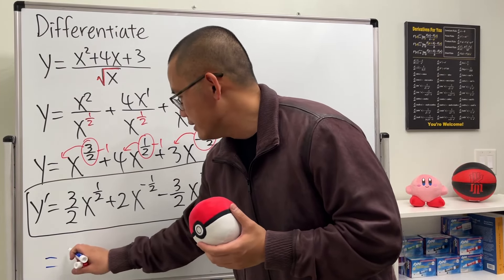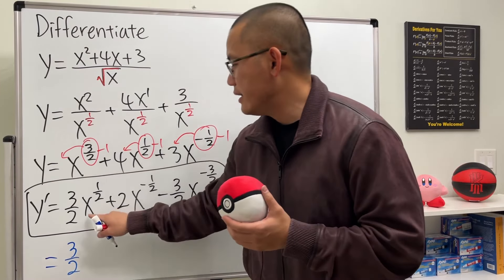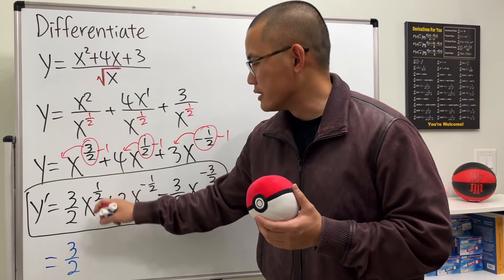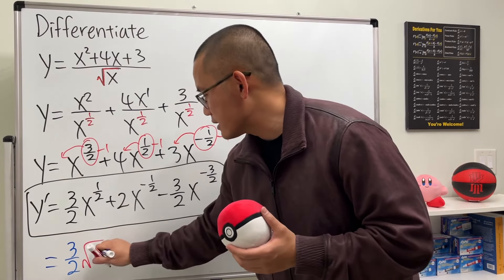So this is 3 over 2 and then x to the 1 half power. 1 half power is the same as the square root. And then we have the x.